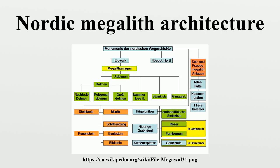It was primarily a product of the funnel beaker culture. Amongst its researchers, Abel Schulte in Mecklenburg-Western Pomerania excavated over 100 sites of different types: simple dolmens, extended dolmens (also called rectangular dolmens), passage graves, great dolmens, unchambered long barrows and stone cysts, between 1964 and 1974.